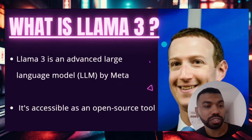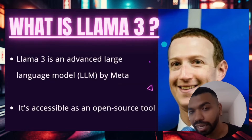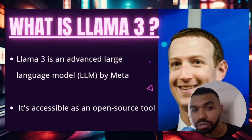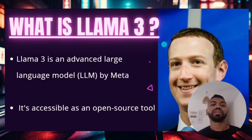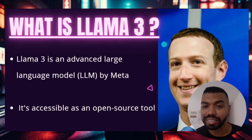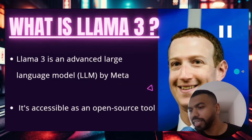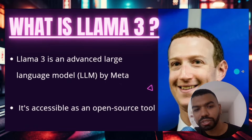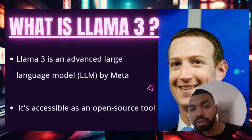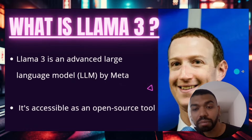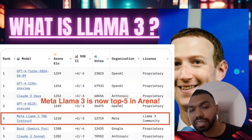Watch till the end because by the end of our session today, you'll see how you can get started with AI projects using Llama 3, which is absolutely open source and absolutely powerful. Building AI software is not limited to big tech companies anymore. Before we dive in, let's talk about Llama 3 — it's an advanced large language model by Meta AI designed for a wide range of applications across various industries. It's accessible as an open source tool which enables developers, researchers, and businesses to innovate and scale their AI solutions.